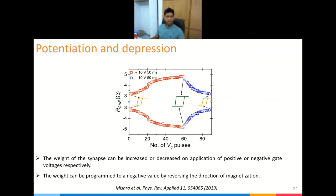By applying various gate voltage pulses, the device can store all these weight values, measured as anomalous Hall resistance. This cobalt-GdOx-platinum device shows various properties of a biological synapse. If you apply a positive stimulus, the weight gradually increases — this is potentiation. If you apply a negative stimulus, the weight decreases — this is depression. Importantly, the device can hold all these different intermediate weight values, which is not possible in standard silicon memory.